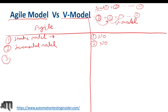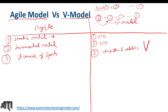The third difference: Agile consists of sprints. The V-model consists of verification and validation. The left side is verification — also called the development cycle — and the right side is validation, the testing cycle. We have verification and validation as two main phases in the V-model, while Agile is based on sprints.